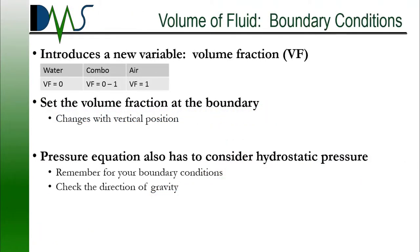How does the volume of fluid method work? For every single cell in our domain, we assign it a volume fraction. This is a new variable, and what that volume fraction represents is how much of that cell is a portion of each fluid. So if that volume fraction equals zero, then that cell is completely water. If that volume fraction equals one, the cell is completely air. And if it's somewhere in between, it's a combination of the two. We use that volume fraction to determine what the physical properties of the fluid in that cell are, combining the physical properties of those two fluids.